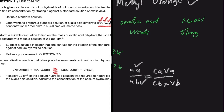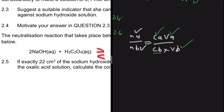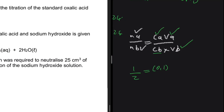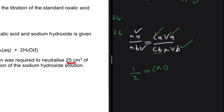We use the balancing coefficients as the mole ratio. The concentration of acid was given as 0.1 mol/dm³. Of the 250 cm³ flask, only 25 cm³ was used — that's the volume we substitute. So we have: 1 over 2 equals 0.1 times 25 divided by concentration of base times 22. Note that we don't need to convert volumes since they cancel in the ratio.